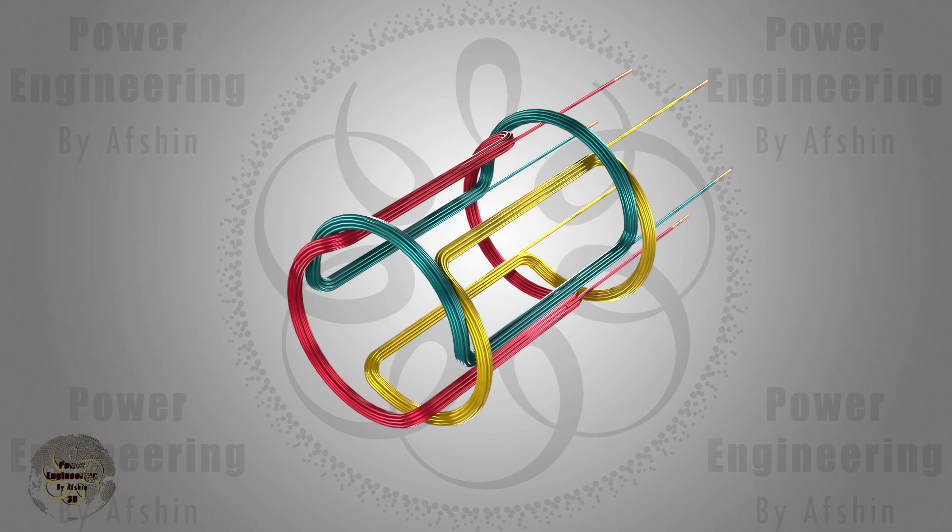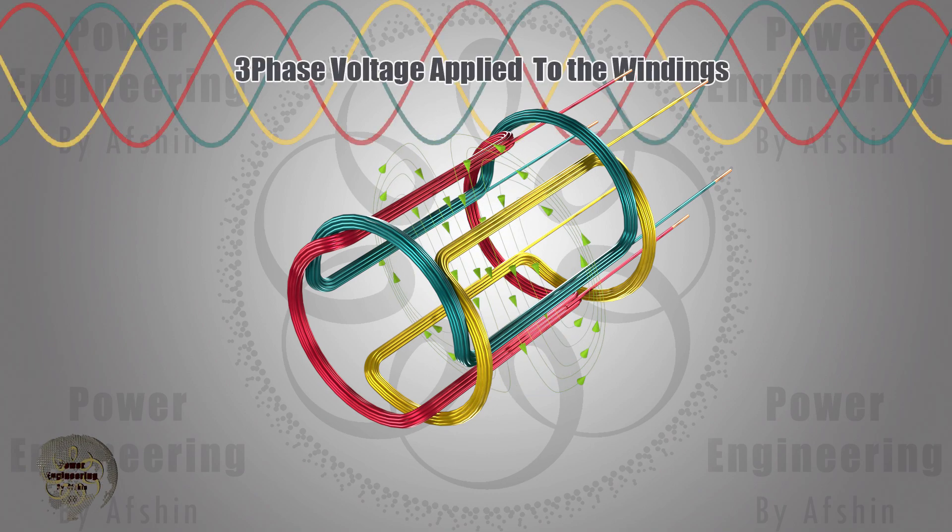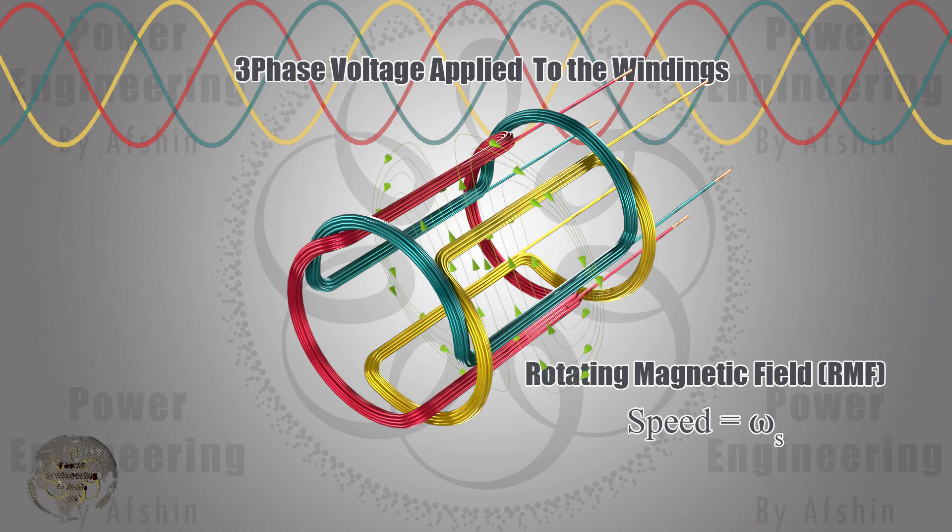Now, let's consider the stator of an induction motor. When connected to a three-phase voltage, the stator generates a rotating magnetic field. To see how this rotating field is generated, watch the video linked above. The speed of the rotating magnetic field generated by the stator depends on the three-phase source frequency.